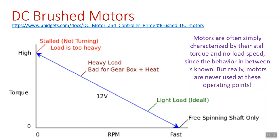Depending upon who draws it or where you get the diagram from, this so-called motor curve may be flipped — you may have RPM on the vertical and torque on the horizontal. In fact, I'm going to show you later on that some of them are switched. The point is that the information you can get is the same either way. That's the beauty about this being a straight line — no matter whether you flip them or not, you still get the straight line.